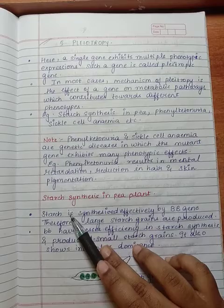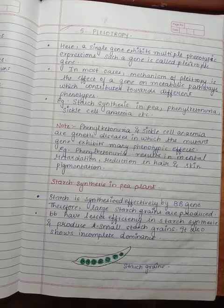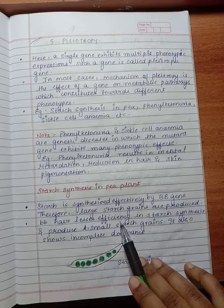Now we go to starch synthesis in pea plants. Starch is synthesized effectively by the BB gene. Therefore, large starch grains are produced. Bb have lesser efficiency in starch synthesis and produce small starch grains. It also shows incomplete dominance.